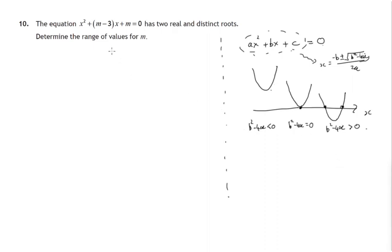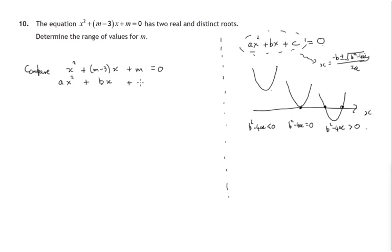That's the theory behind what we're going to do. In this equation we need to find what the values of a, b, and c are, then work out the discriminant and set it greater than zero. Comparing x squared plus (m minus 3)x plus m with the general form ax squared plus bx plus c equals zero, we get: a equals 1, b equals m minus 3, and c equals m.